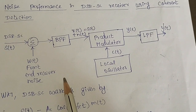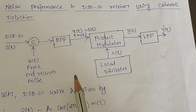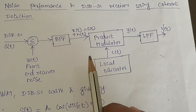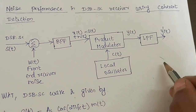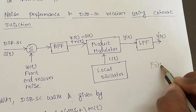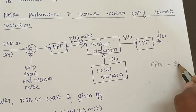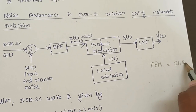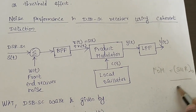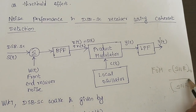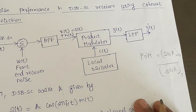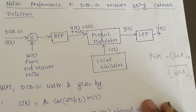We are going to derive the figure of merit for this DSBSC receiver. The figure of merit formula is signal to noise ratio at the output divided by the signal to noise ratio at the input. This is the formula to find the figure of merit.